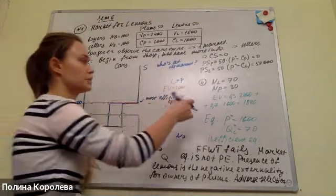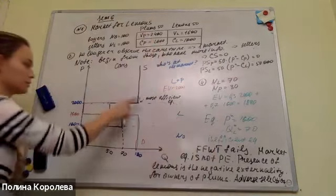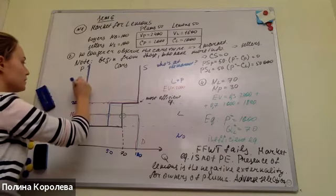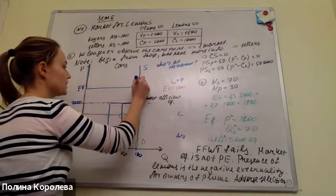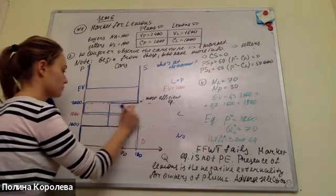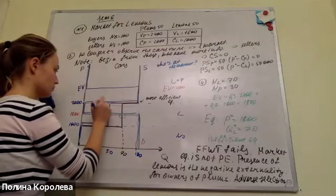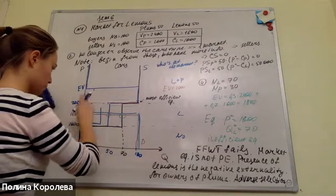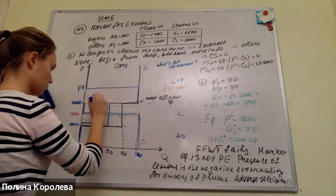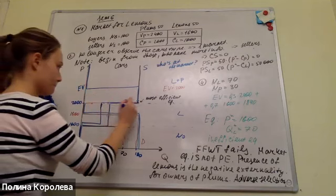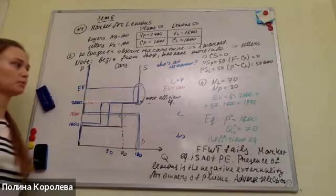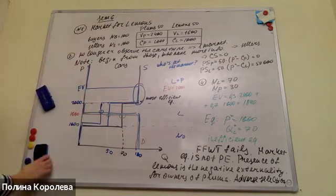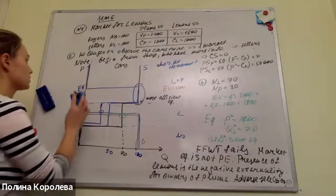Conversely, if we have more plums and fewer lemons compared to the base case, the expected value will be higher, and we will have a set of Pareto-efficient equilibria including an efficient one.